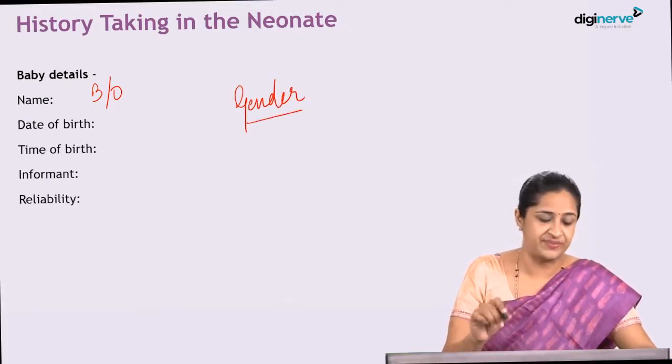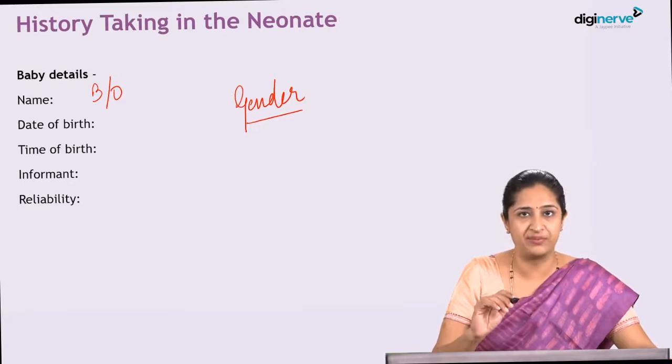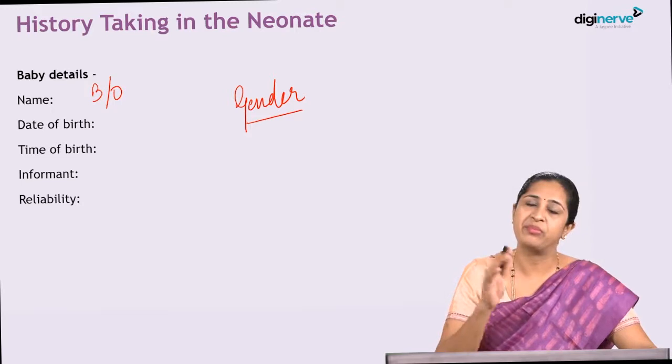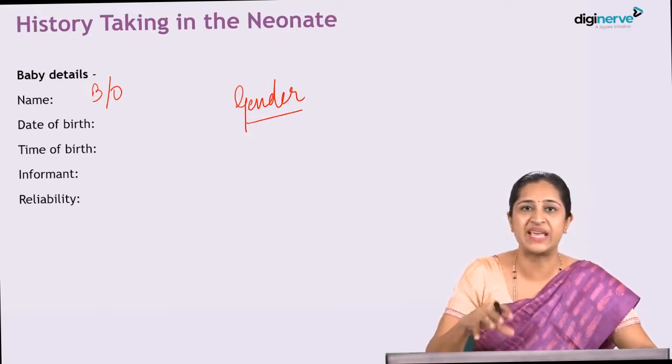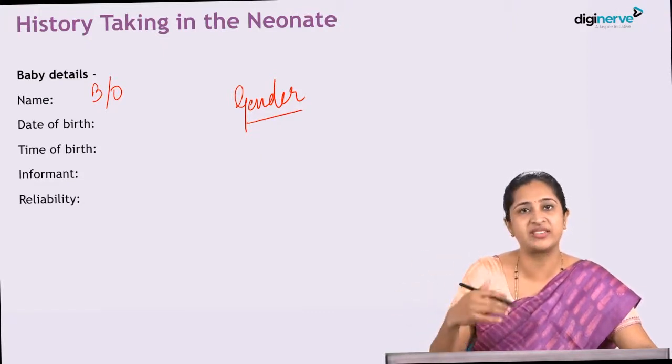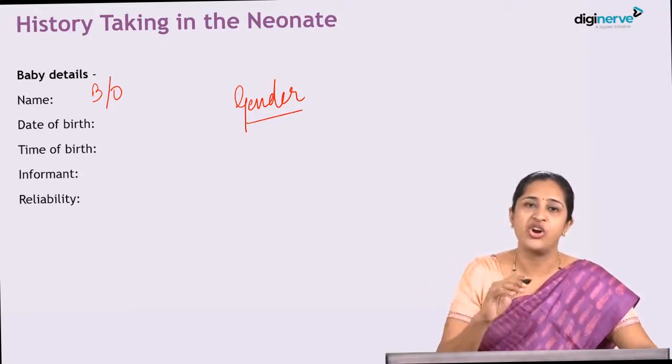Informant and reliability are important because sometimes the mother has been caring for the baby but will not be present when you are taking the case. She may have gone for another obstetric examination or is unwell. At that time there will be a bystander or caregiver — a grandmother or aunt — giving you the history. Please make sure the informant is the one who has cared for the baby. Otherwise, wait for the mother so she can give you reliable history.